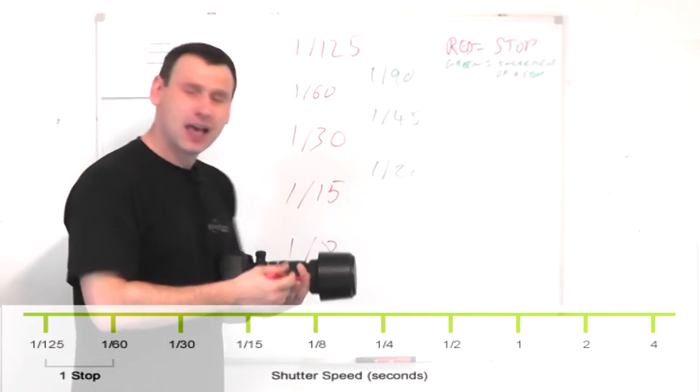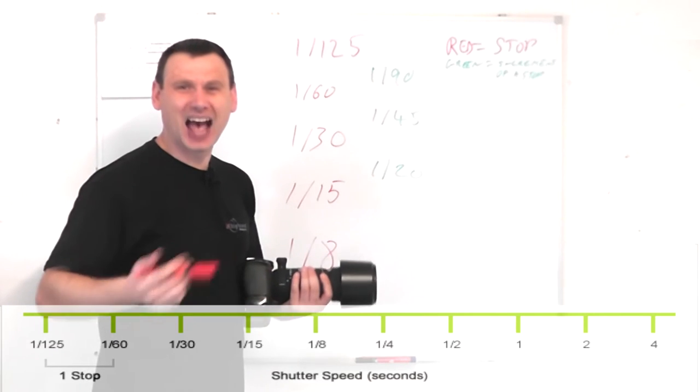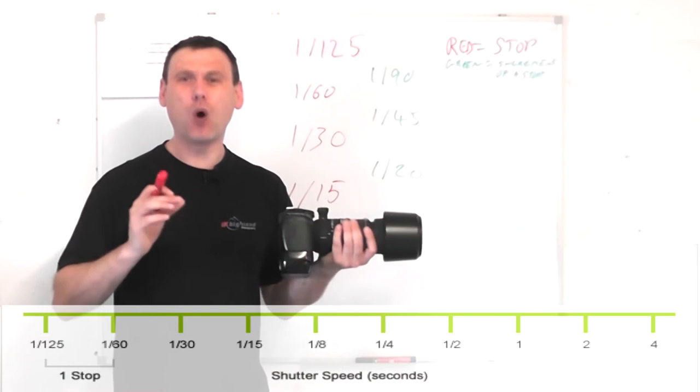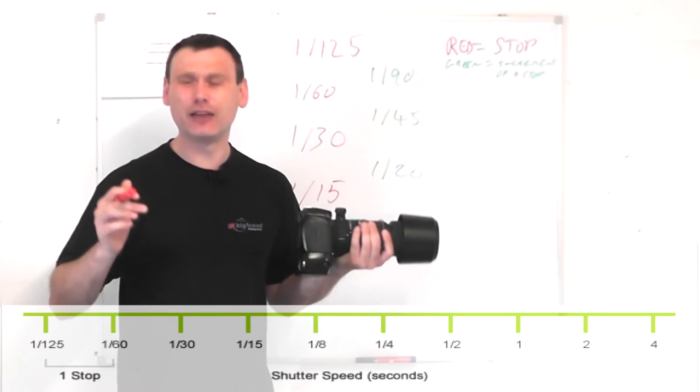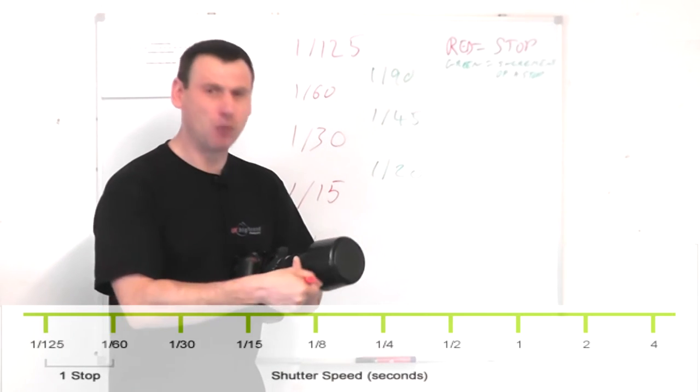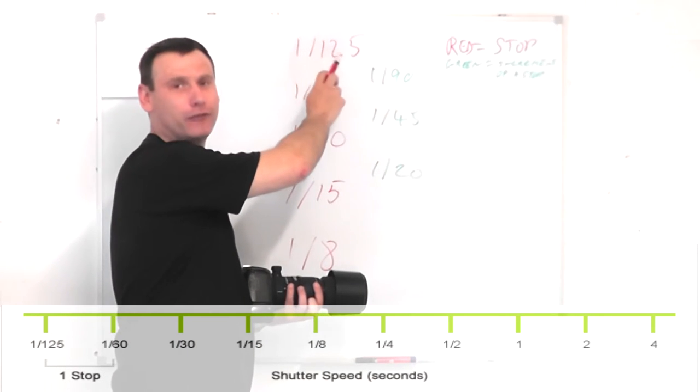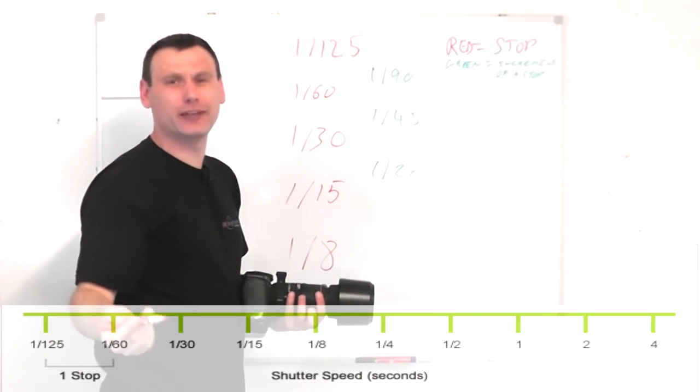So basically just like ISO and aperture, there's a set standard with regards to what a stop is in photography. For example, let's have a look at the shutter speed 1/125th of a second.